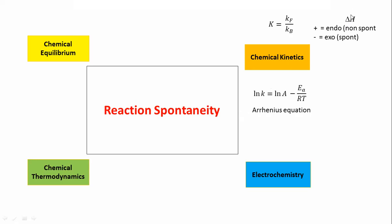Now we link chemical kinetics with chemical equilibrium. You can link the change in enthalpy, and you can also link with the equilibrium constant. The equilibrium constant is the ratio of the rate constant for the forward reaction to the rate constant for the backward reaction. If you get the rate constant from the equation, you can put values for both forward and backward reactions to get the value of the equilibrium constant. More will be the value of kf, more will be the value of the equilibrium constant.